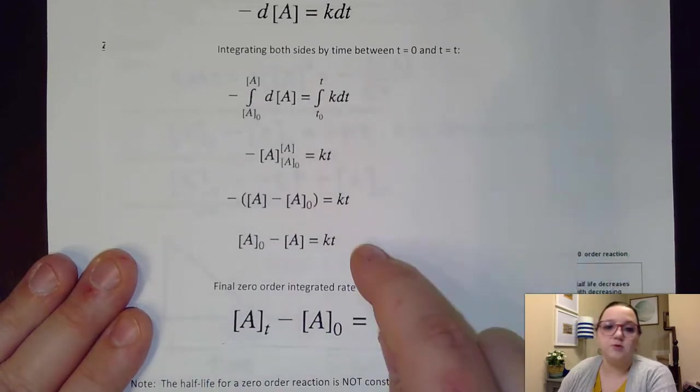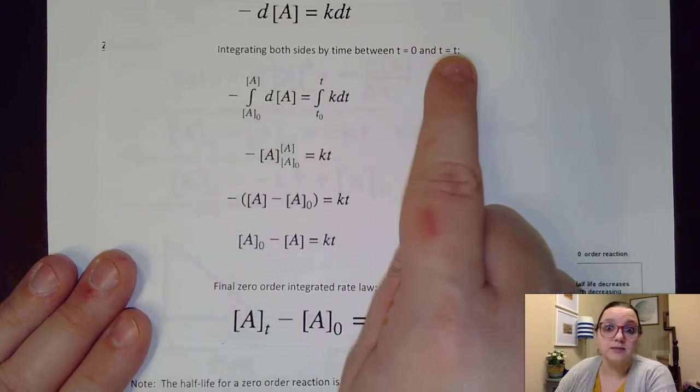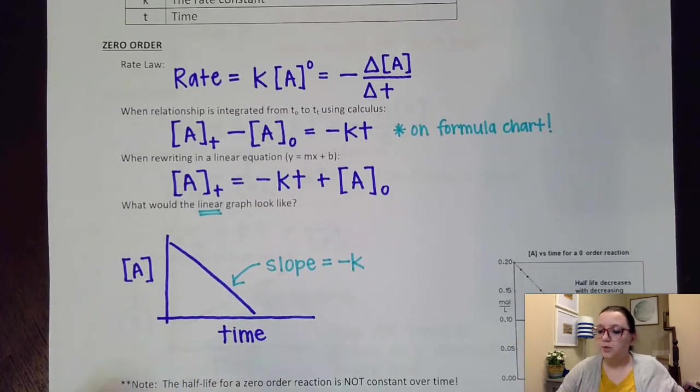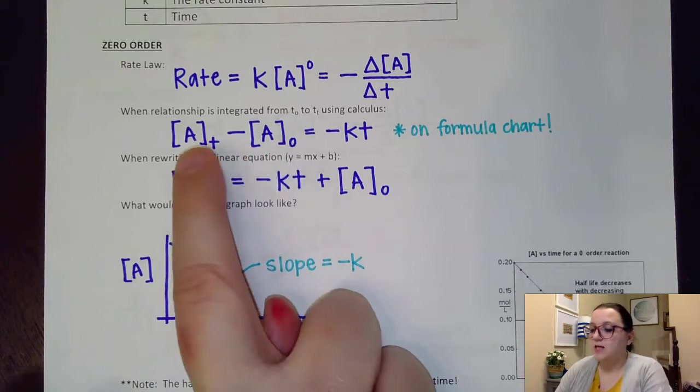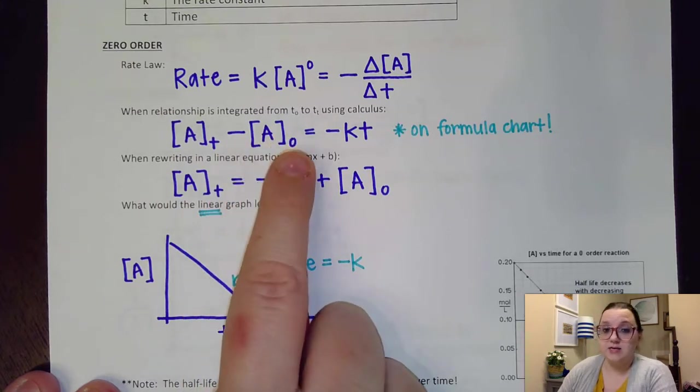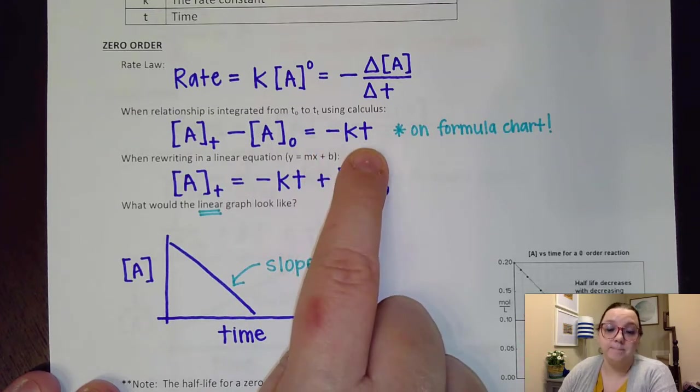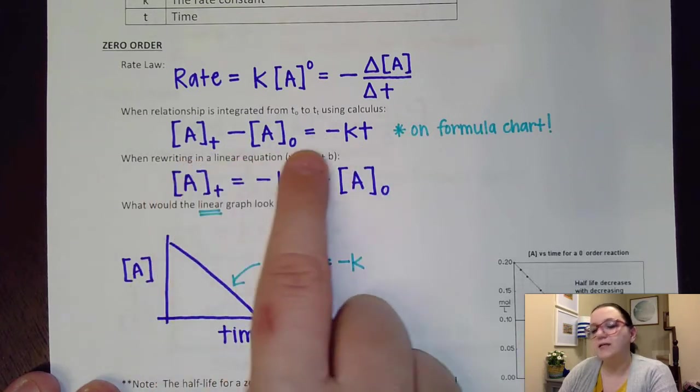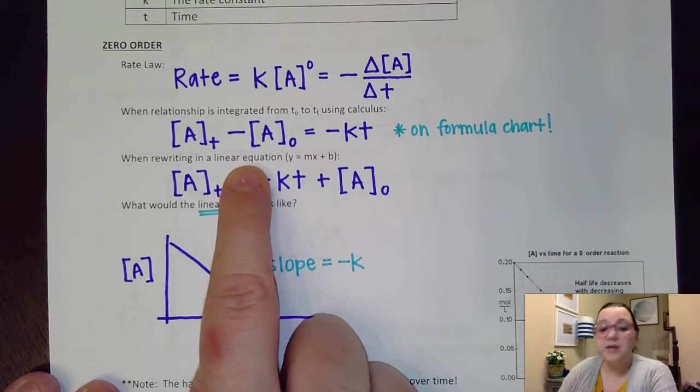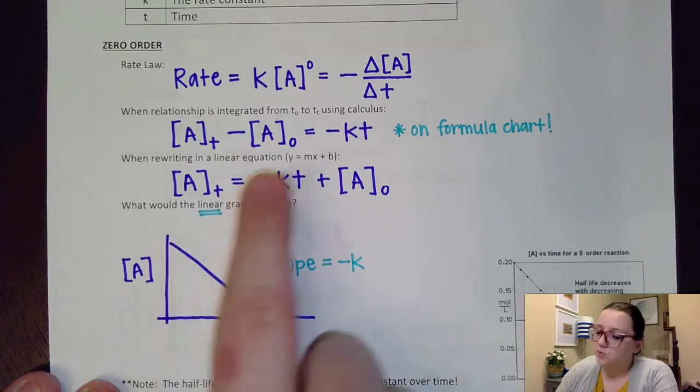The end result of that integration, the end result of addressing this formula between a time of zero and some time that we select is this equation right here, that the concentration of A at some time minus the concentration of A initially would equal a negative rate law constant K times time. So what I can do is I can take this formula and rearrange it into a linear equation, a Y equals MX plus B format, remembering that M represents our slope.